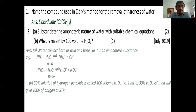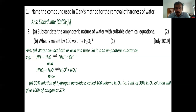Next question: What is meant by 100 volume H2O2? We usually express the concentration of H2O2 in terms of volume. 100 volume H2O2 means one ml of that particular H2O2 solution can liberate 100 ml of oxygen at STP. Similarly, HNO3 + H2O → H3O⁺ + NO3⁻.